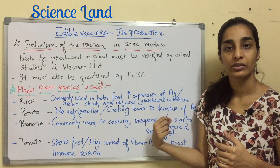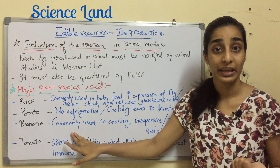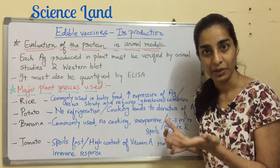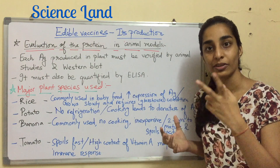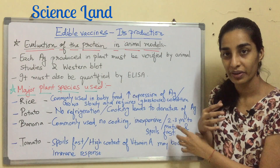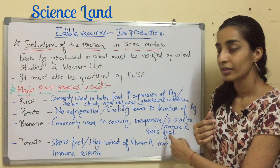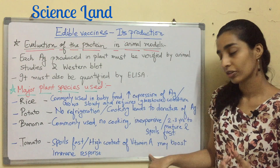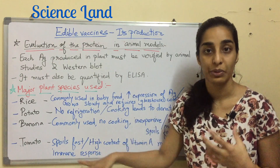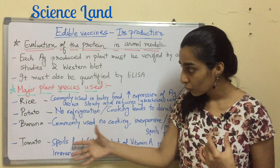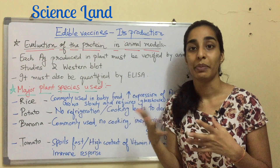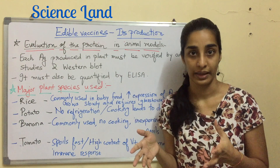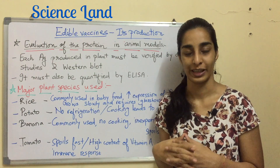Banana is commonly used, doesn't require cooking, and is inexpensive, but it requires two to three years to mature and spoils very fast. Tomato also spoils quickly but has a high content of vitamin A, which may boost the immune response. There are many other plant species used, including tobacco, lettuce, alfalfa, and carrots. That's it for today's video — thank you so much for watching.